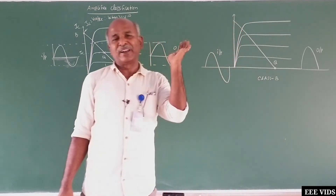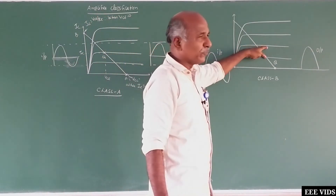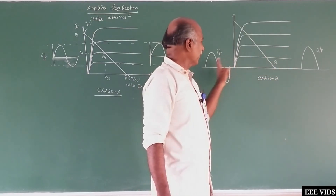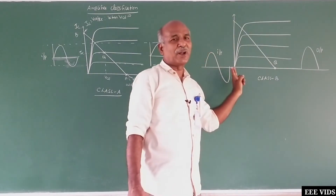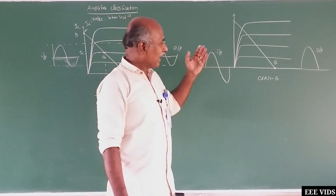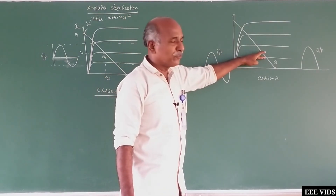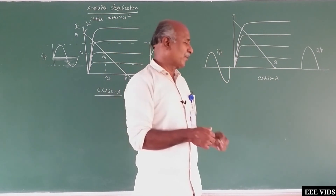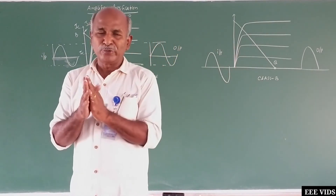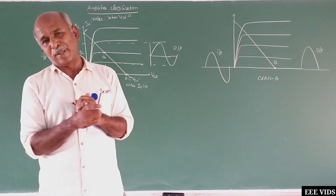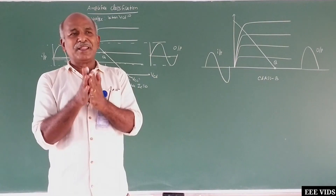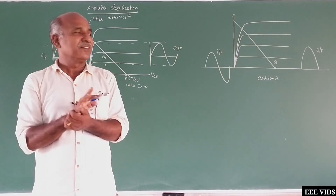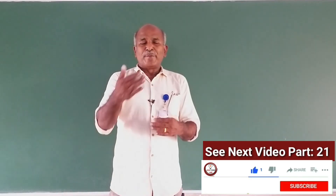So this is Class A and Class B — each defined by a different operating point choice. For Class AB, the operating point is positioned such that slightly more than one half cycle is amplified. For Class C, the operating point is chosen such that only a small portion of one half cycle appears at the output. The classification is based on the operating point chosen in the real amplifier circuit.